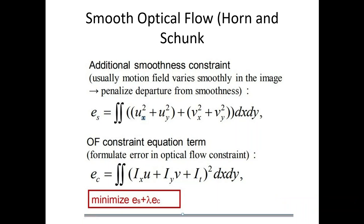We saw that the brightness or color consistency constraint gives us more unknowns than equations. The question arises how we are going to recover it. Obviously we need some additional constraint, and Horn and Schunck gave a solution which is known as smooth optical flow — they came up with an optimization or minimization of an error function with an additional constraint.